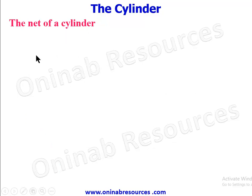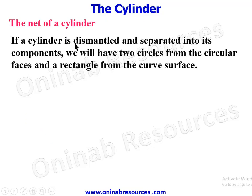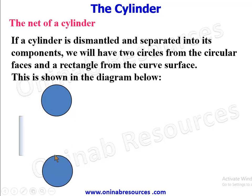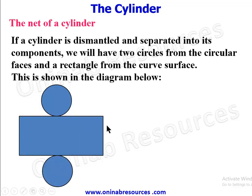The net of a cylinder: if a cylinder is dismantled and separated into its components, we will have two circles from the circular faces and a rectangle from the curved surface. We have the top circular face, the bottom circular face, and the curved surface in the form of a rectangle. The length of this rectangle is the circumference of the circle, while the width is the height of the cylinder.